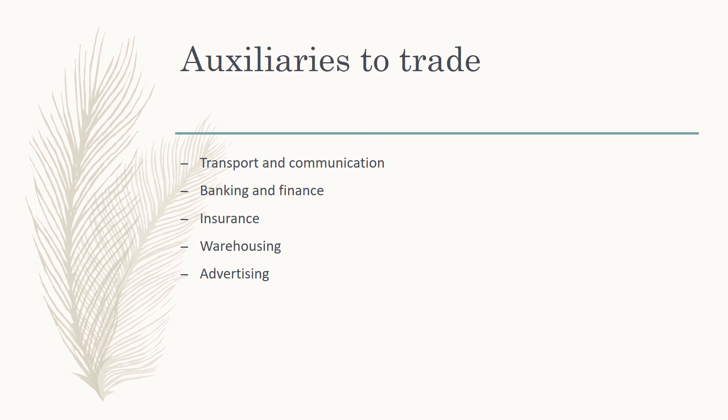Next is banking and finance. To produce or sell goods, money is needed. Banks provide money for these activities. Even in auxiliaries to trade, money is needed for buying and selling purposes, and banking helps by providing that finance.